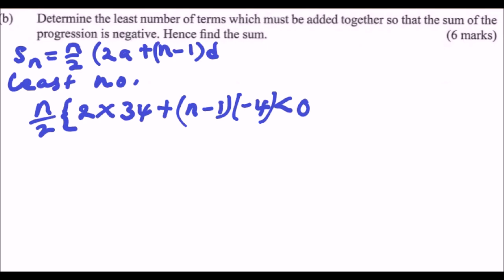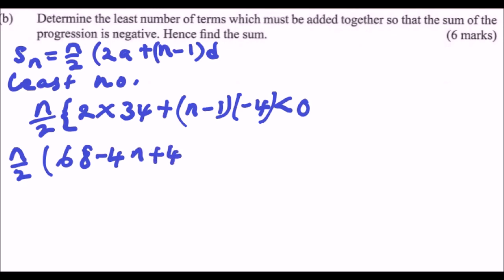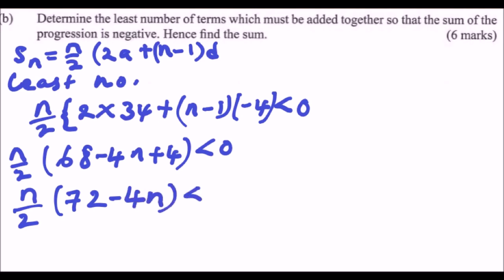Working this out: n over 2 multiplied by the bracket 68, then opening the inner bracket we get minus 4n plus 4, giving us n over 2 multiplied by 72 minus 4n, and this must be less than zero.